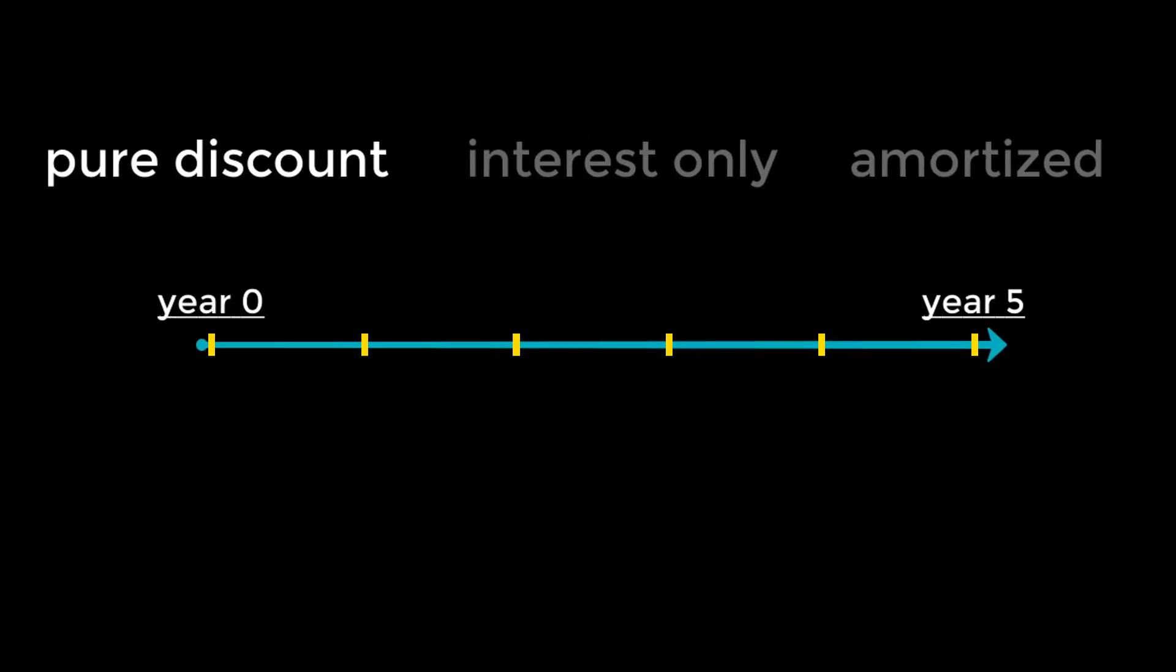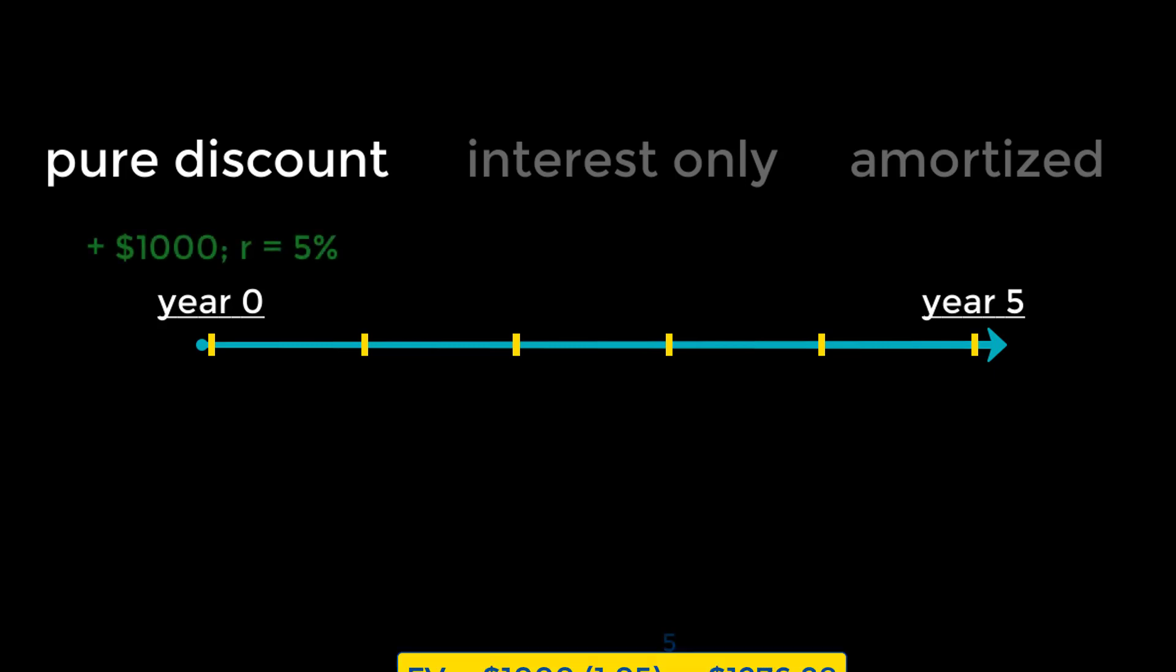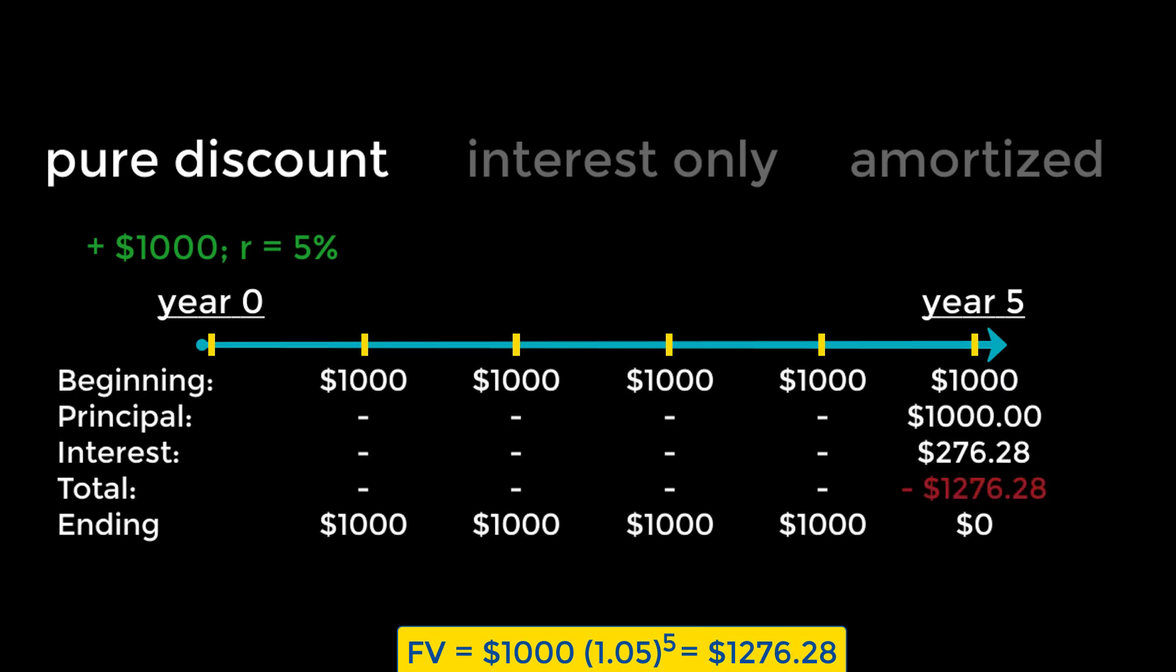Pure discount loans are exactly like the basic single cash flow we covered about two videos ago. These kinds of loans allow the borrower to receive money today and repay it as a single lump sum in the future. These are typically used in the short term, as in for a year or less. However, sometimes they can be used for longer than a year, and it might be useful to compare how it's different from other cash flows using a timeline.